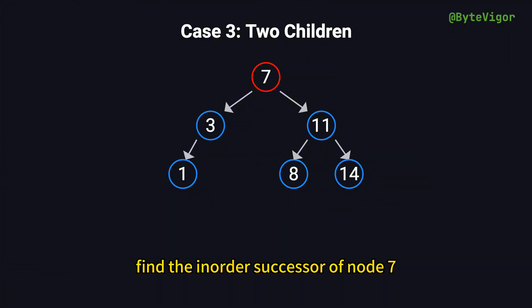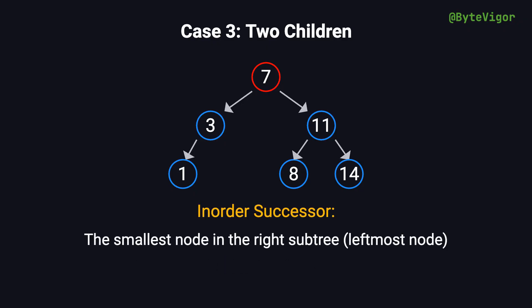We find the in-order successor of node 7, replace the value of node 7 with the value of the in-order successor, and then remove the in-order successor node from the tree. The in-order successor is the smallest node in the right subtree of the node to be deleted, representing the next larger value after the current node.